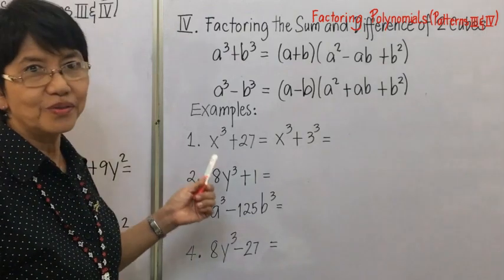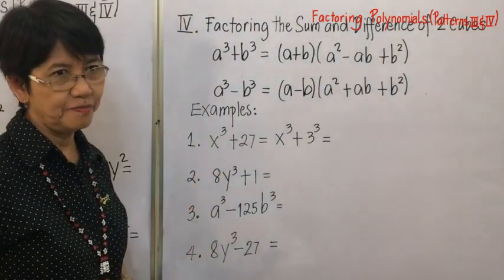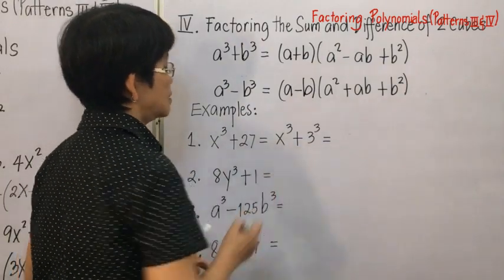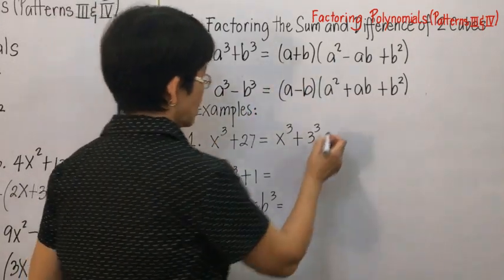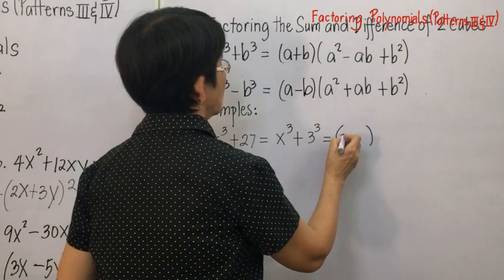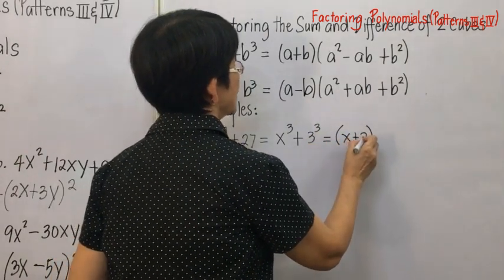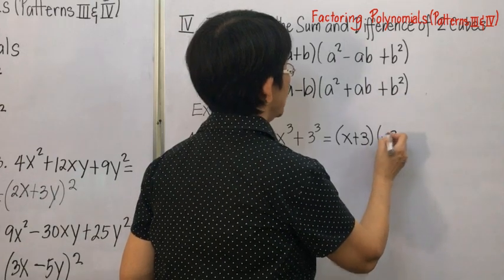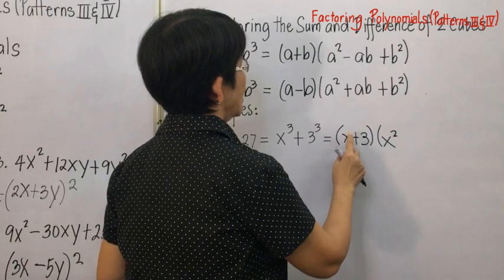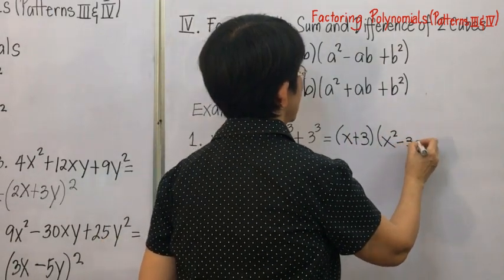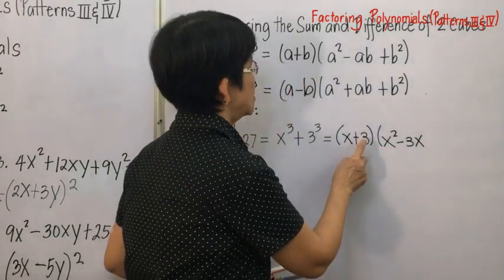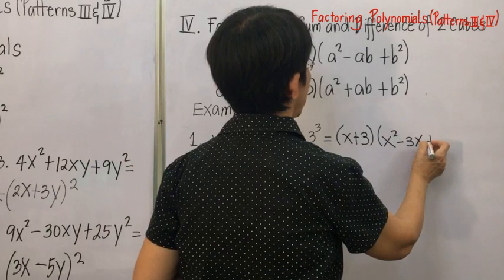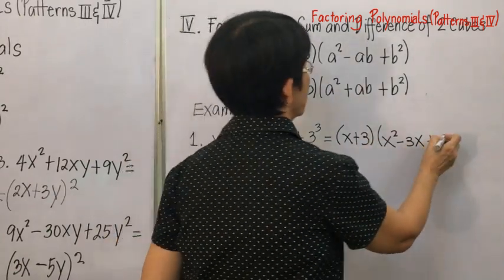Following those formulas, we have x cubed plus 27. Rewrite as x cubed plus 3 cubed. The first factor is the cube root of x cubed plus the cube root of 27, giving x plus 3. The second factor: square x to get x squared, multiply a and b to get 3x — with opposite sign, so minus 3x — then square the last term to get 9. So the answer is x plus 3, times x squared minus 3x plus 9.